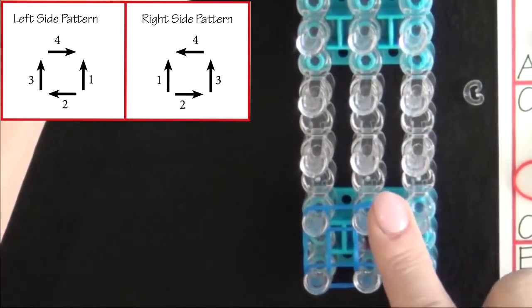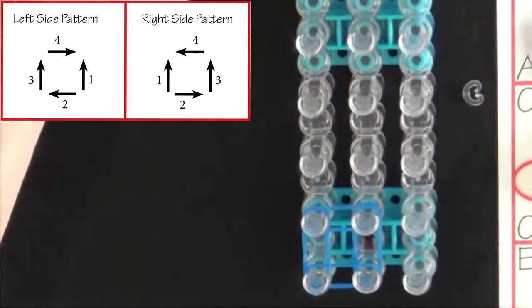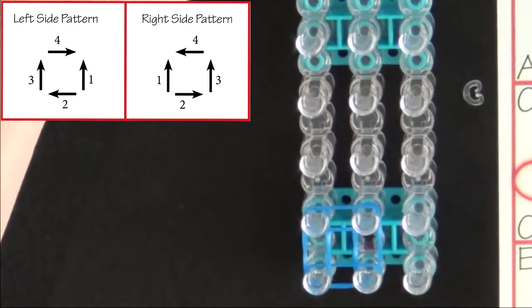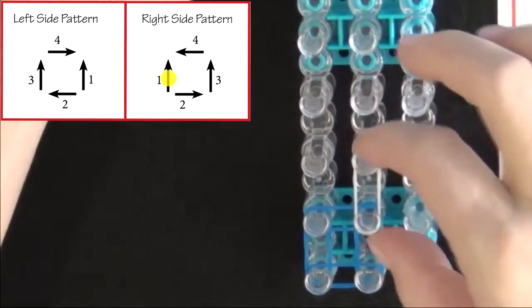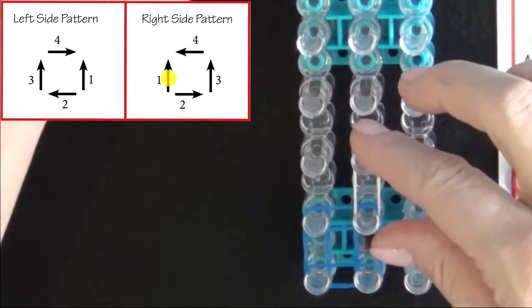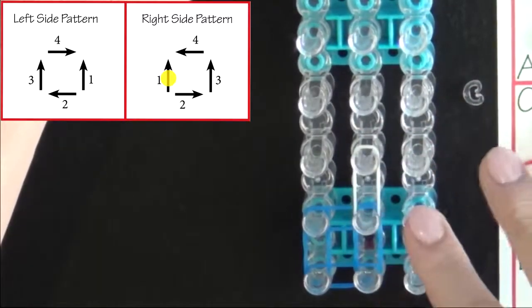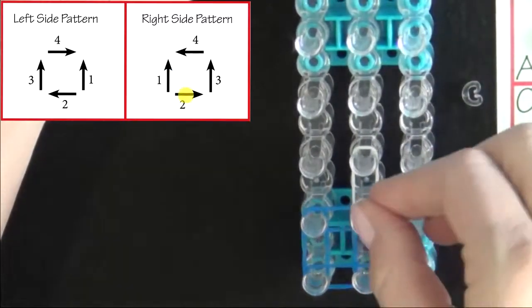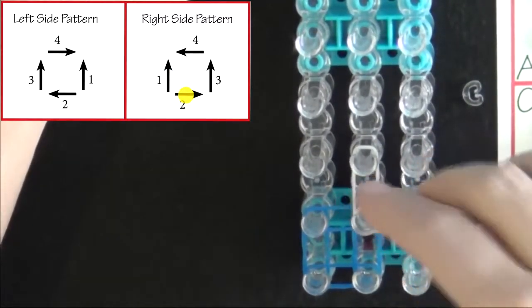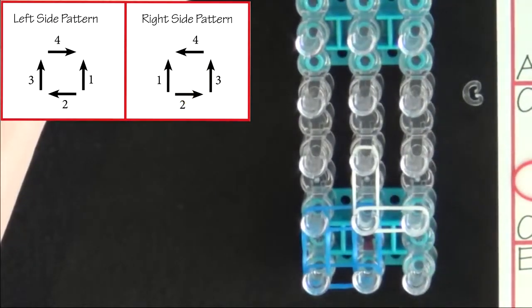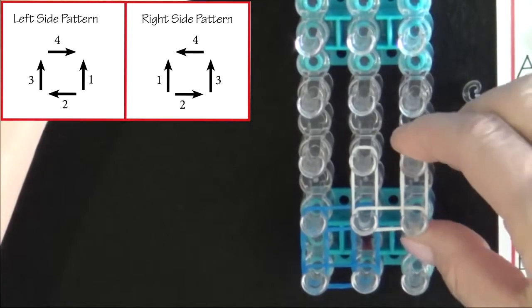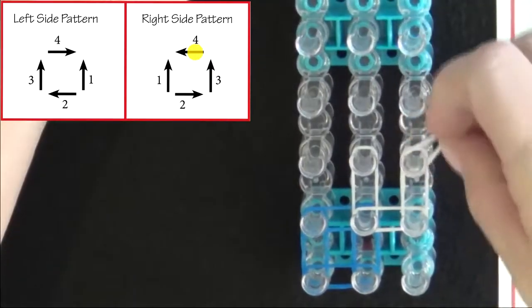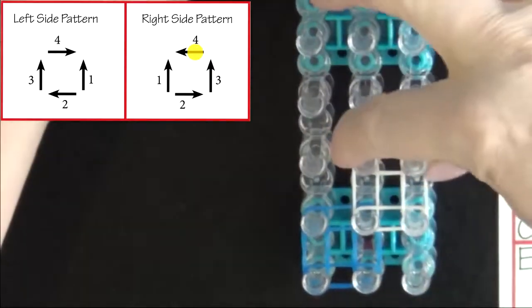Now we'll place a right side pattern. We'll be using the B colored bands. We'll start from this pin and place the first band going up the center of the loom. This is a right side pattern so our next band will be placed out to the right. The third band will be going up the right side of the loom. And the fourth will be placed back to the center pin.